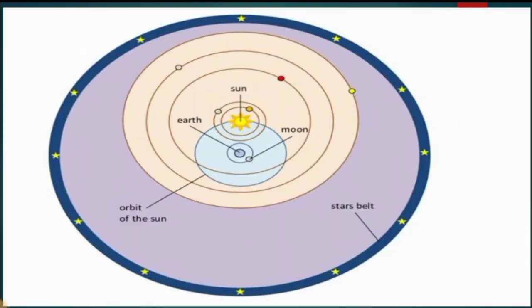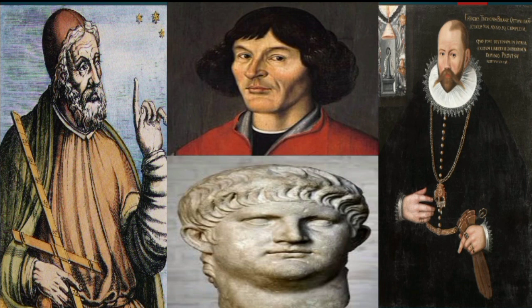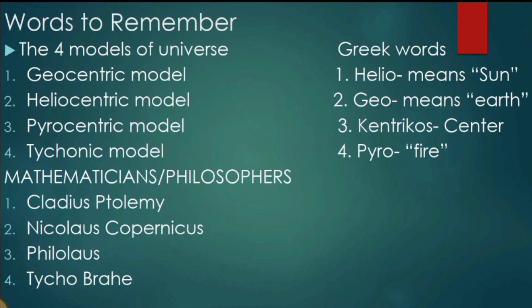So that's all for our discussion on these four models. To recap: geocentric — Earth is the center of the universe; heliocentric — the Sun is the center; pyrocentric — fire is the center; and tyconic — a combination of geocentric and heliocentric, where Earth is at the center but the five planets revolve around the Sun. Words to remember for your exams or quizzes: enumerate the four types of models of the universe.